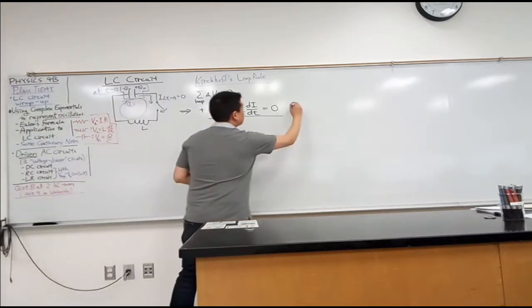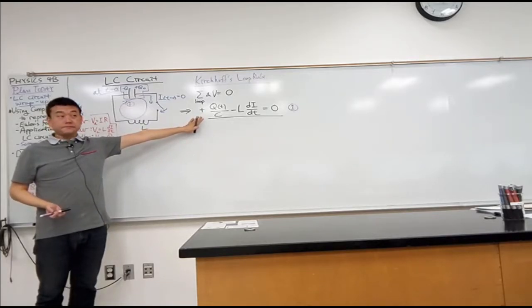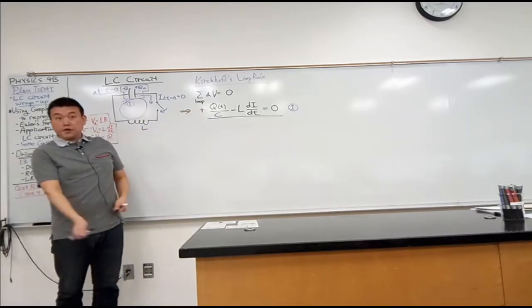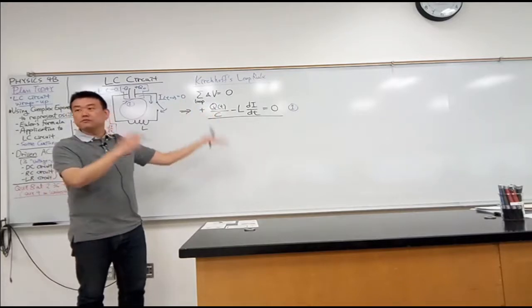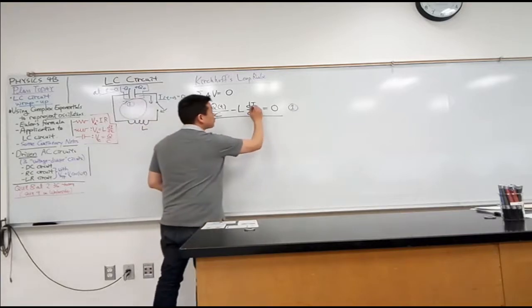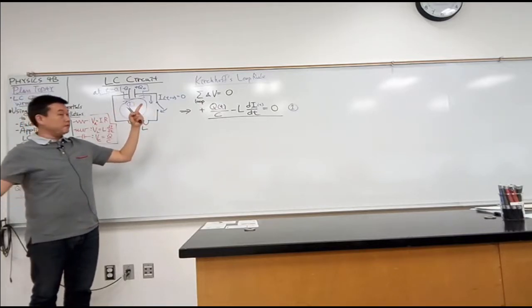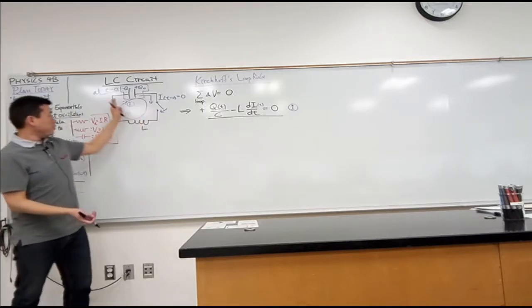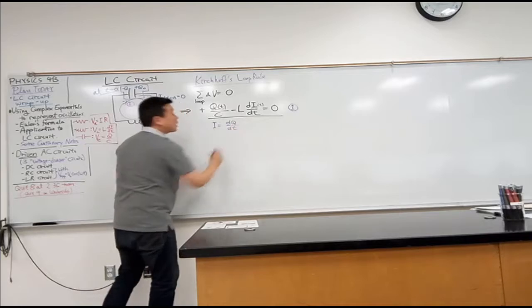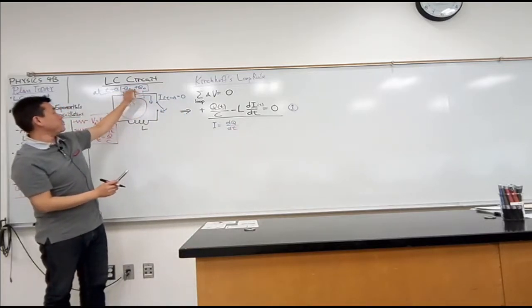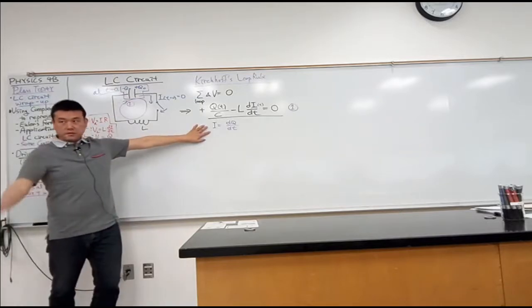I have one equation here. Do I have enough information to solve this? I have two unknowns — the charge as a function of time, which is what I'm trying to find, and the current as a function of time. So I need one more expression. The current through the capacitor is given as the rate of change of the amount of charge on the capacitor, because whatever current flows out is the charge that was stored on the capacitor flowing out.